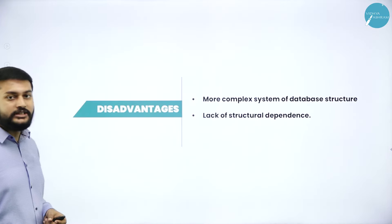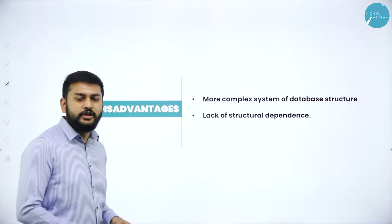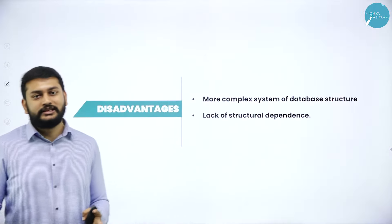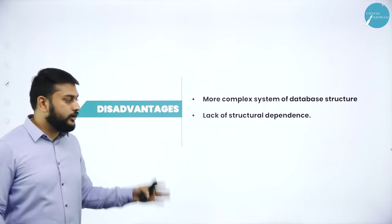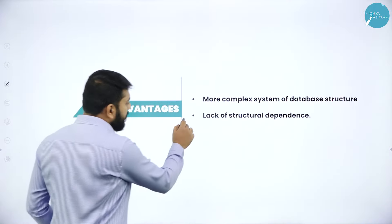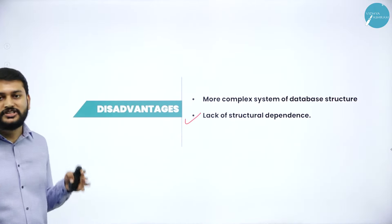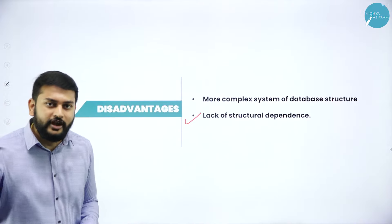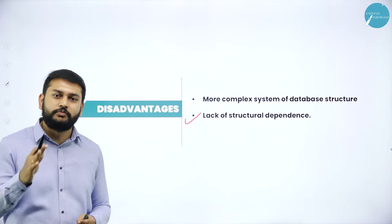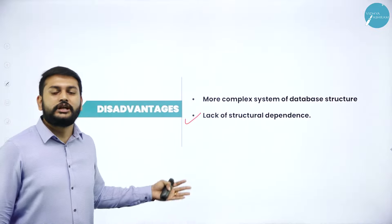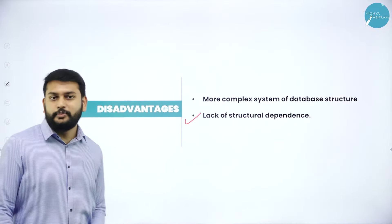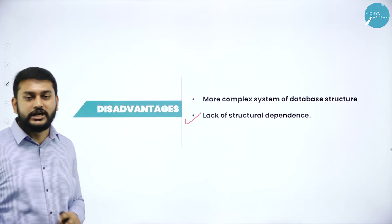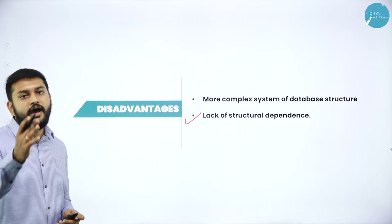The disadvantages of the network model are: more complex system of database structure when the number of records increases, and lack of structural dependency — you cannot predict a particular structure as it grows in the form of a graph with multiple paths to visit multiple records.